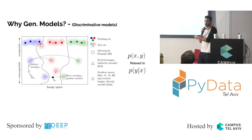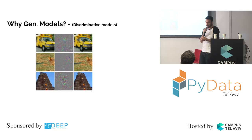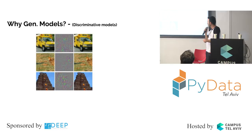Every time you do a discriminative model, you're just calculating a hyperplane — everything on the left is class A, everything on the right is class B. You don't know anything about group A or group B; you just know how to separate them. So what is wrong with discriminative models in general? Not just deep learning models — discriminative models as they are.